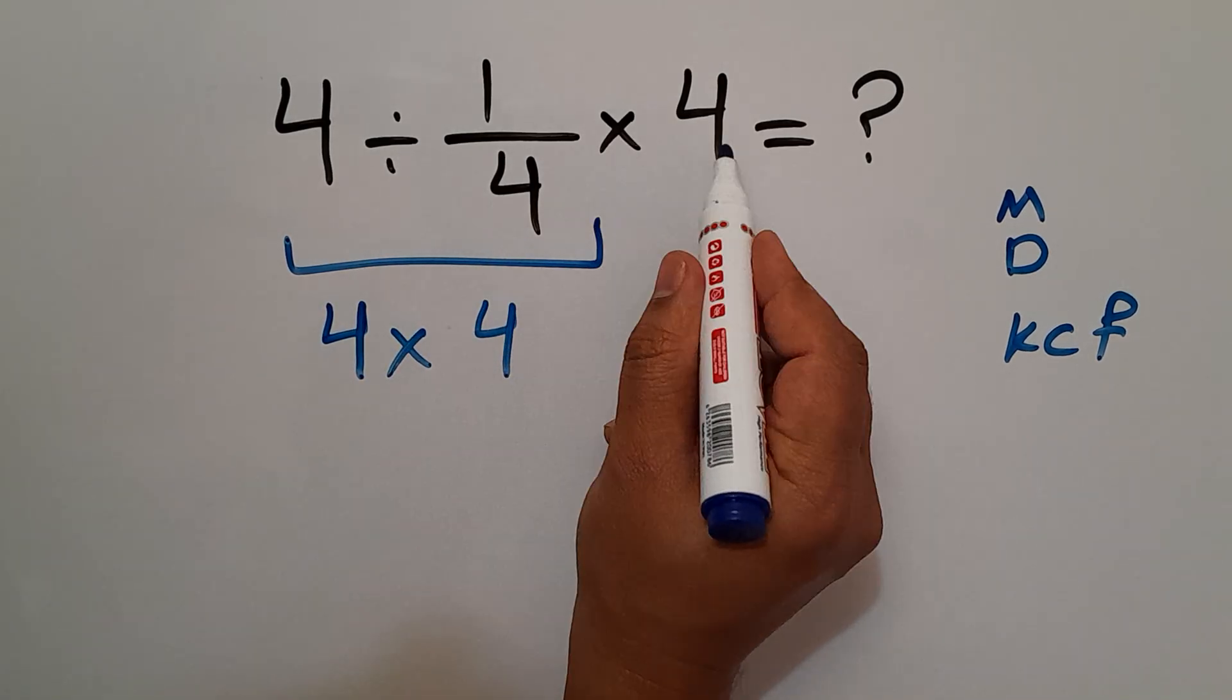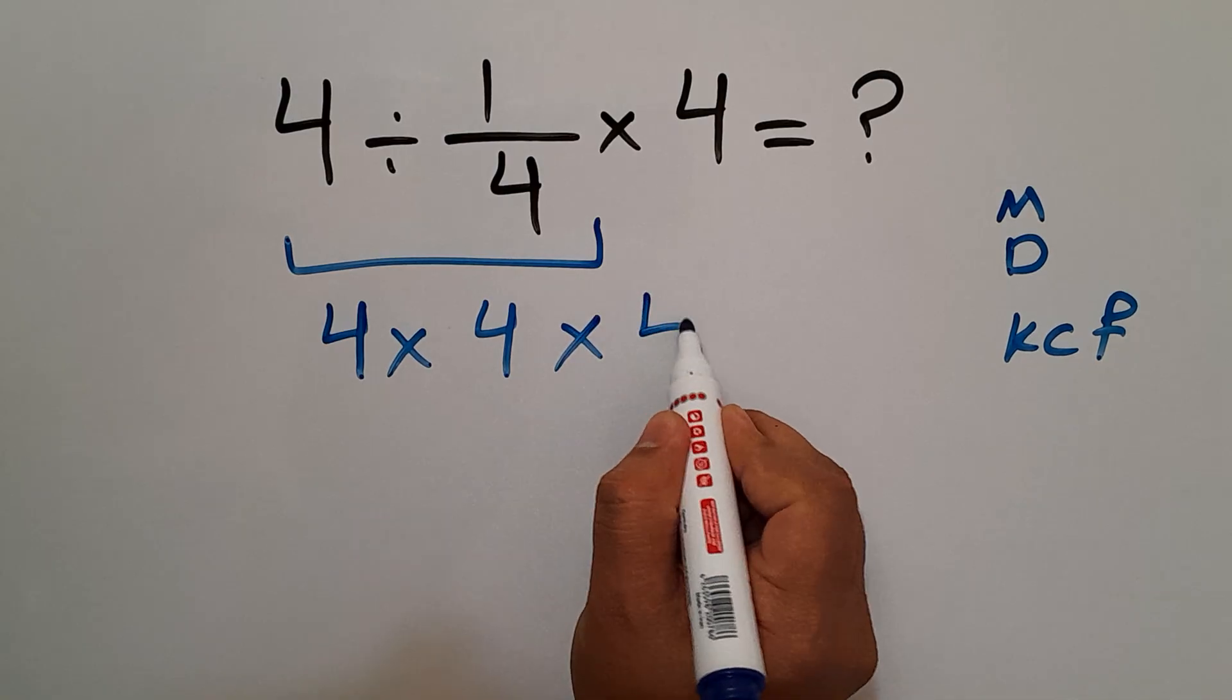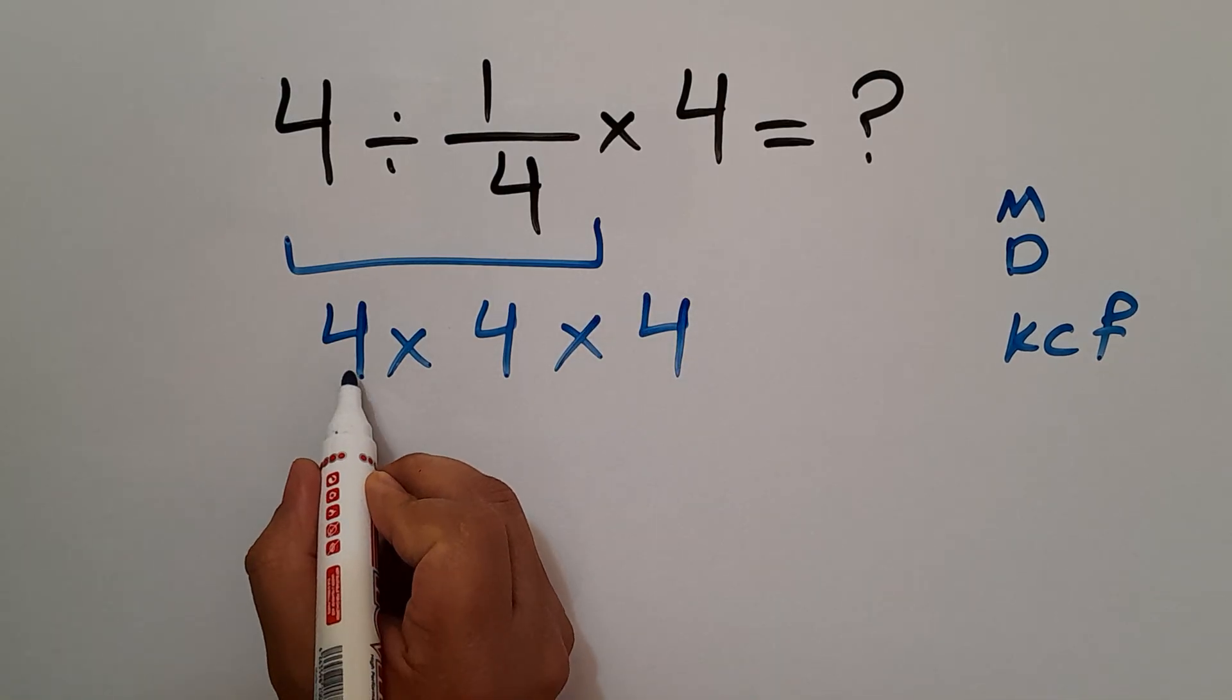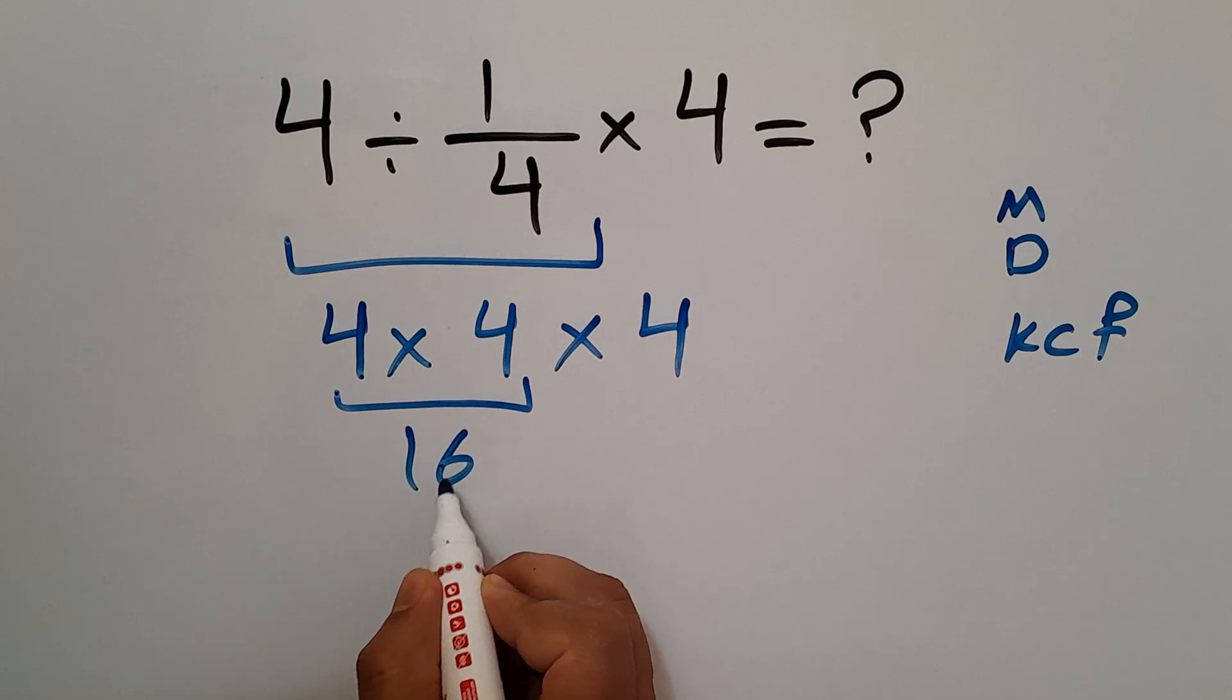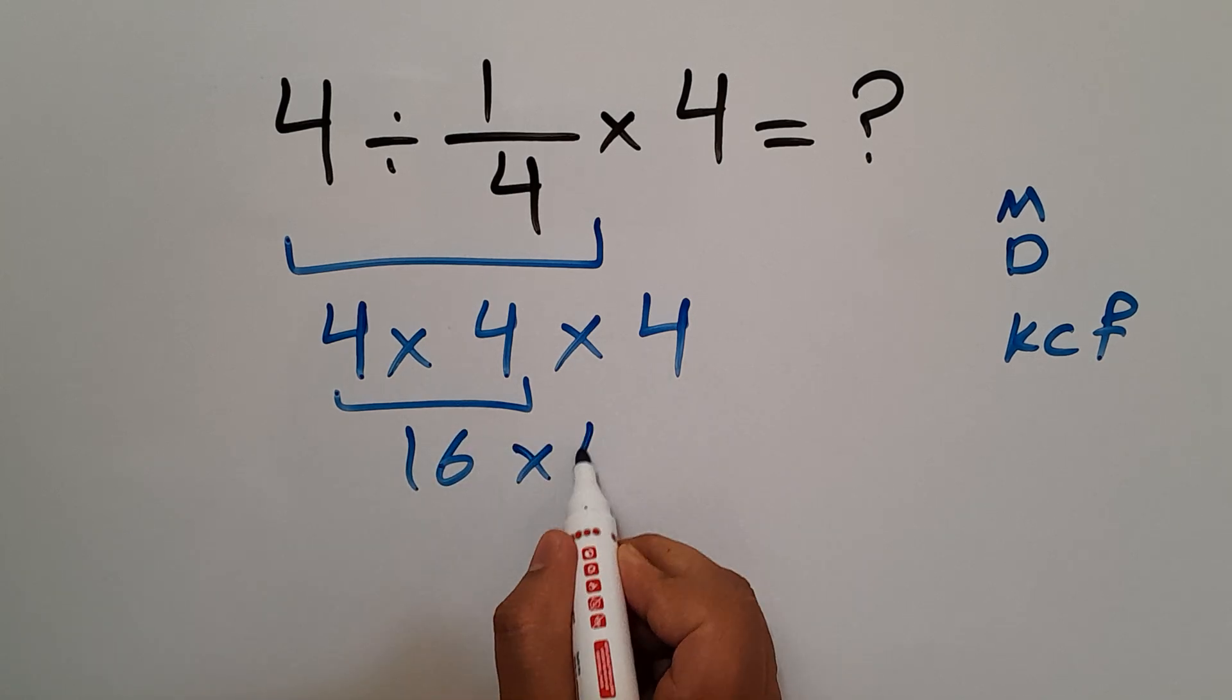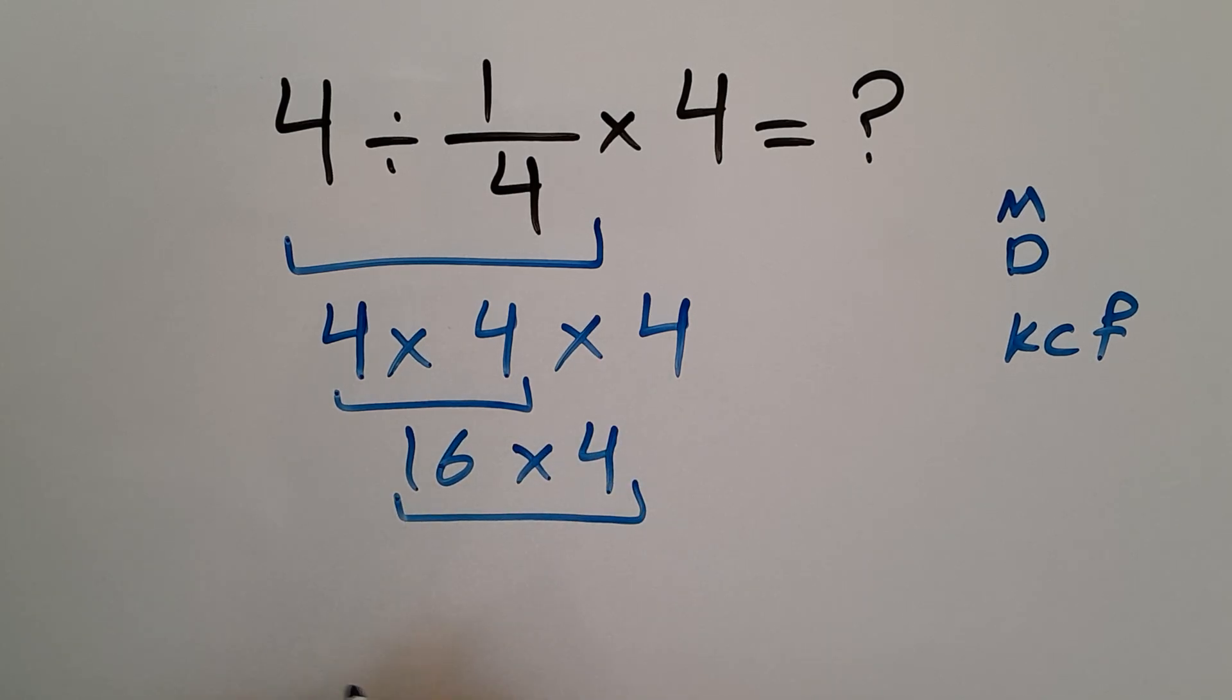Okay, so 4 times 4 gives us 16, and 16 times 4 equals 64. So our final answer to this problem is 64.